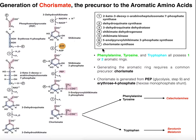The fifth enzyme, shikimate kinase, is going to use the phosphate from ATP and phosphorylate this oxygen, giving us shikimate 3-phosphate. The sixth enzyme in this pathway is going to require a second molecule of phosphoenolpyruvate, or PEP, coming from the cytoplasm. It's going to attach the three carbons from PEP onto the oxygen on the opposite side of the shikimate molecule. The enzyme is called 5-enolpyruviol shikimate 3-phosphate synthase, and the resulting molecule is called 5-enolpyruviol shikimate 3-phosphate.